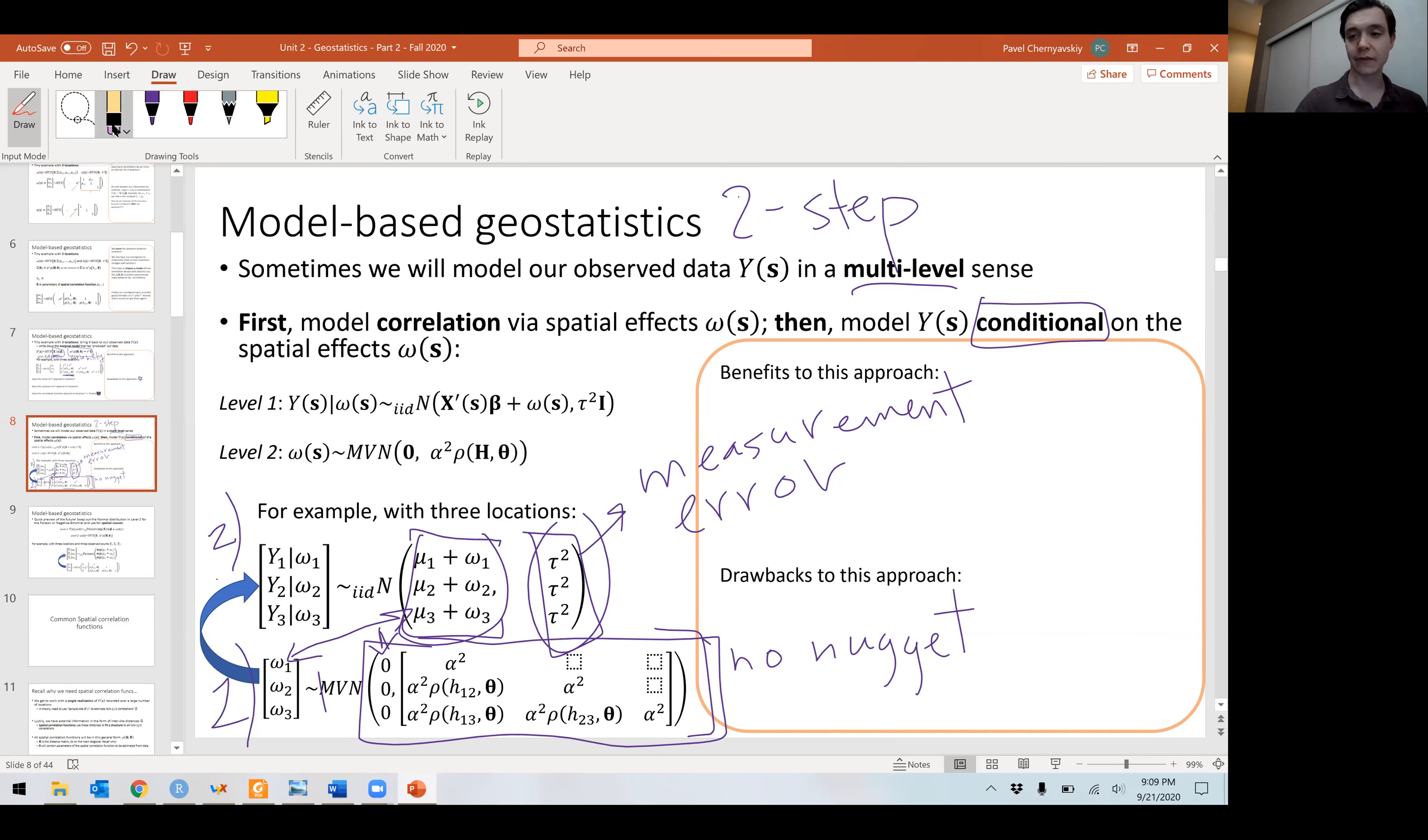So everything spatially structured, modify the mean and add some random measurement error around it. So that is the conditional or multi-level approach. The benefits to this, the major benefit is we can use distributions that are not normal.